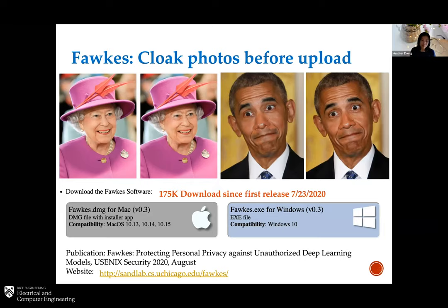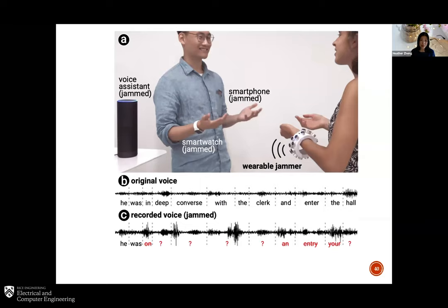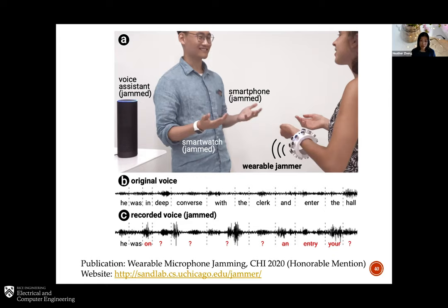Along the same line, I also did another project protecting user privacy against microphones. For microphones, it's harder to deal with speech recognition — we're actually attacking the microphone itself by injecting ultrasound noise to disrupt it. Instead of jamming noise all the time, we only generate noise periodically so that it's very difficult to remove, doesn't use a lot of energy, but it breaks down the voice recognition system. We also have a website about the design aspect — feel free to visit and check out our paper.